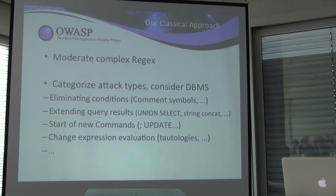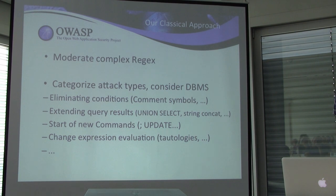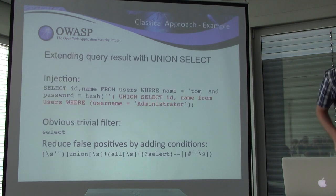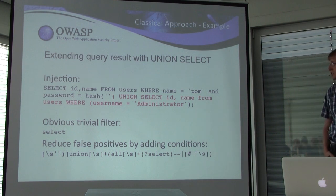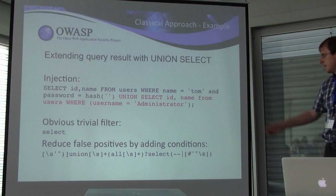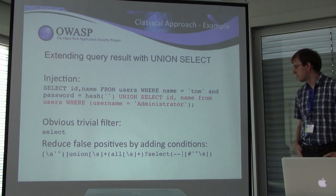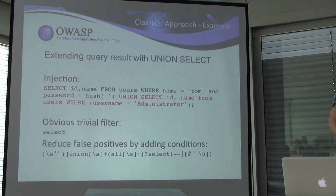The classical approach to filter SQL injection is basically what we do: we have moderate, complex regular expressions. We categorize these expressions according to the attack types, and in these categories we consider different database management systems — for example, how the command symbols look in those databases. One example is extending the query result with a UNION SELECT. An obvious trivial filter would be to block SELECT, but unfortunately this causes a lot of false positives. You have to add additional conditions, which is very dangerous — maybe an attacker finds a way to circumvent the filter. The expression gets much more complicated, and even this can be circumvented with different code spaces not matched by backslash-s in PCRE.